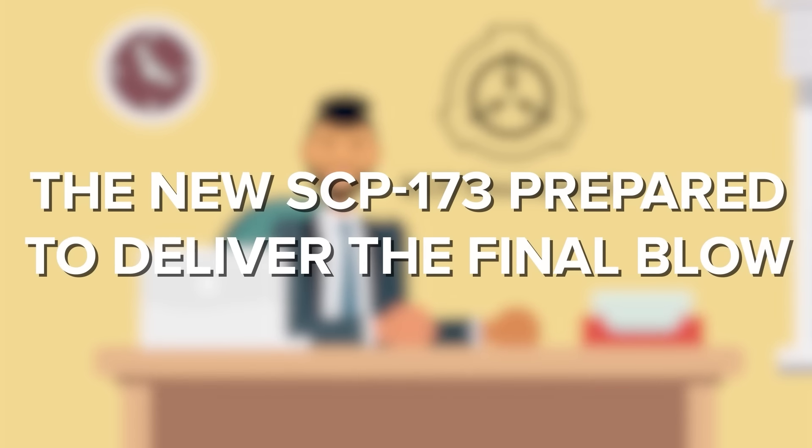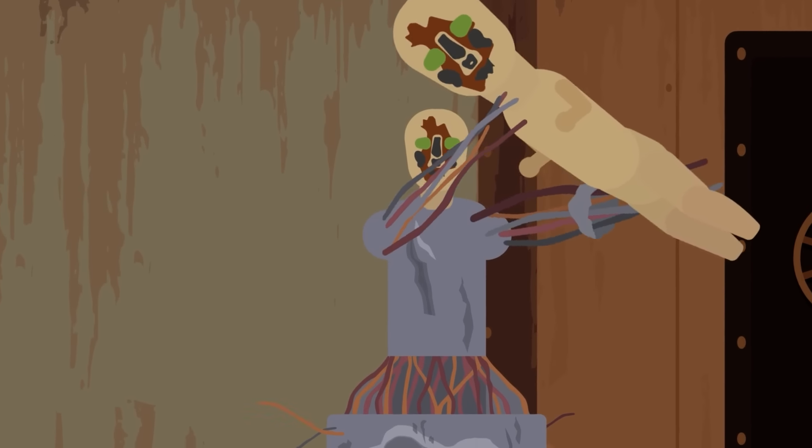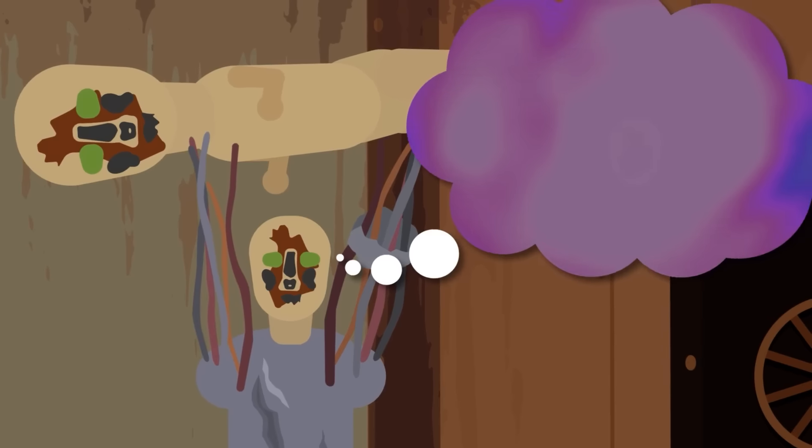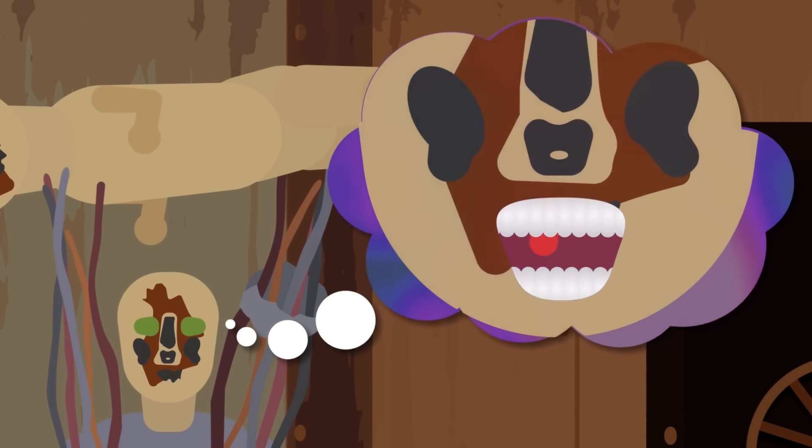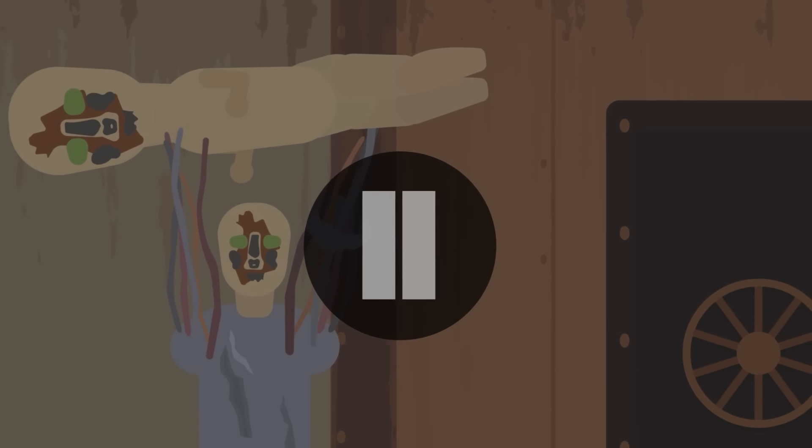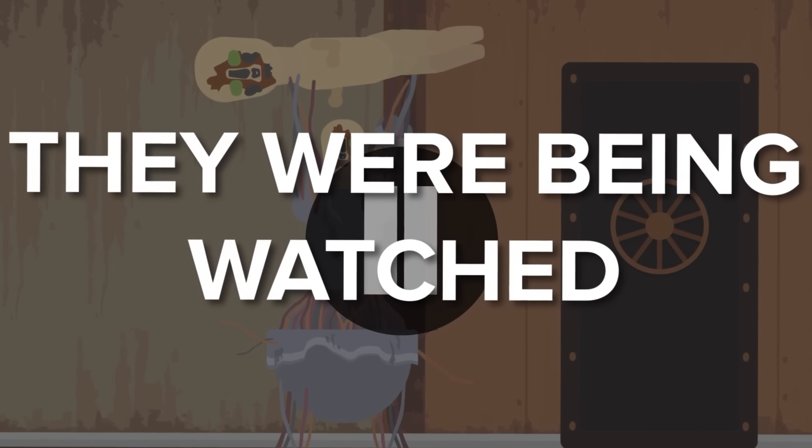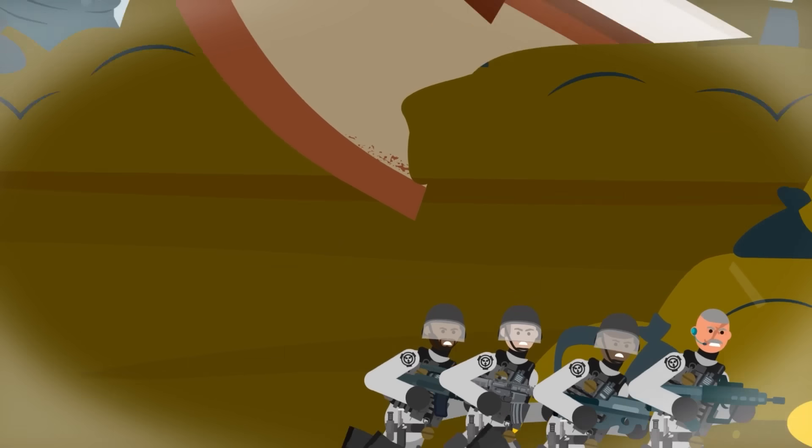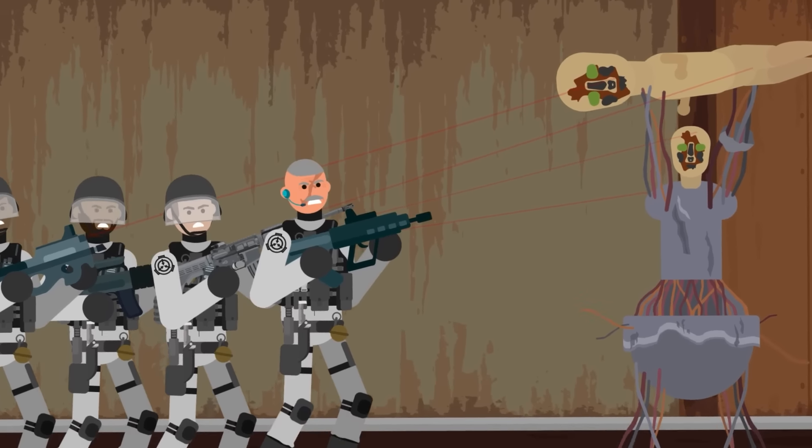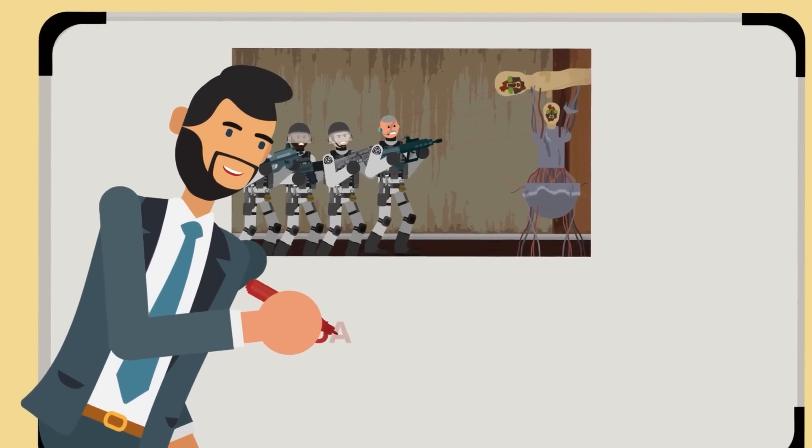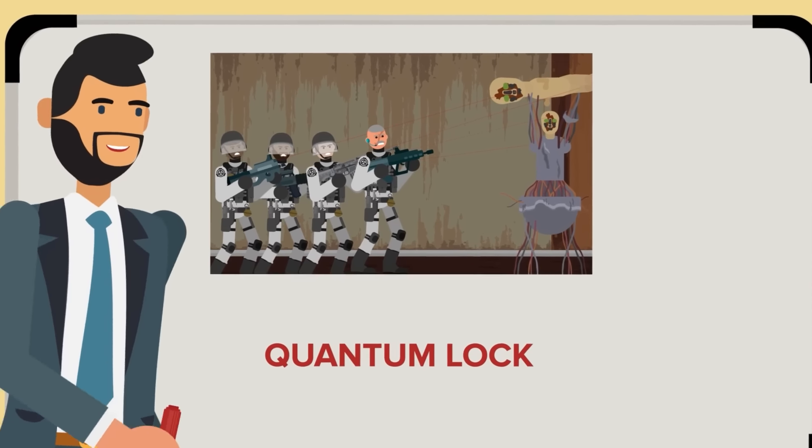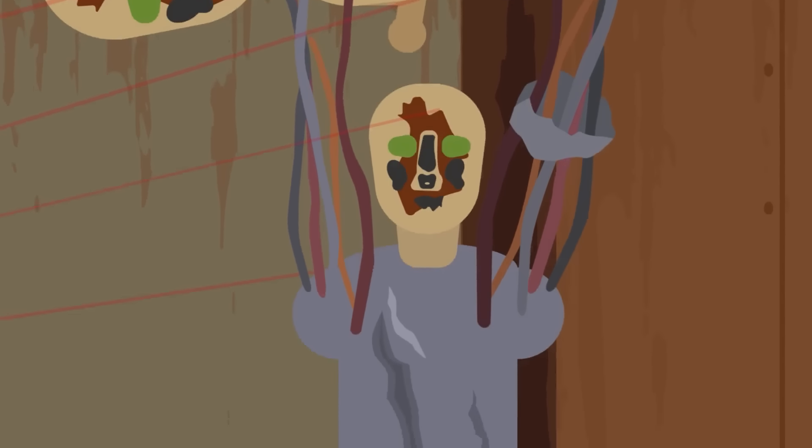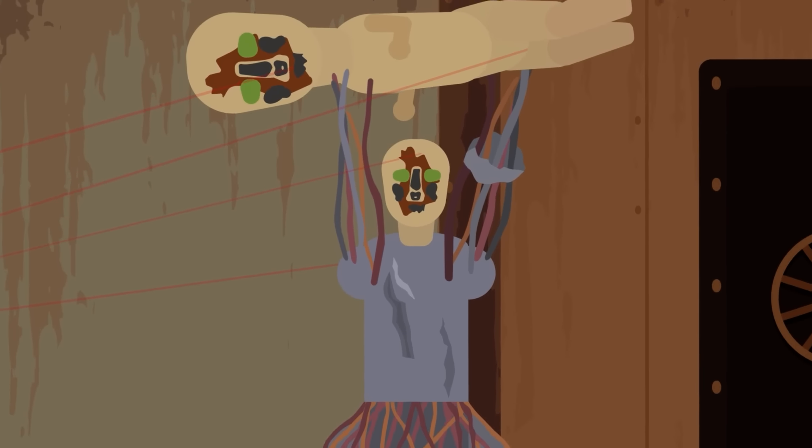The new SCP-173 prepared to deliver the final blow. It hoisted the original high above its head, ready to slam down and shatter the older sculpture into pieces. If it had a mouth, it would have roared in triumph. But just as it was about to strike, both anomalies froze. They were being watched. A mobile task force had arrived, storming into the wreckage of the Walrus just in time. Their weapons raised, laser sights trained on both sculptures. The presence of observers instantly triggered SCP-173's quantum lock, freezing both versions in place. The old sculpture was suspended in mid-air, held above the head of the new version, inches away from being destroyed.